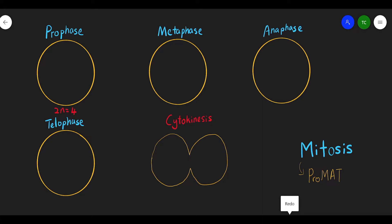2n means diploid. Only somatic cells will carry out mitosis, so 2n is diploid. The number of chromosomes is 4: first, second, third, and fourth chromosome, along with the centriole and spindle fiber. The nuclear membrane is drawn with a gap because in prophase the nuclear membrane is disappearing.